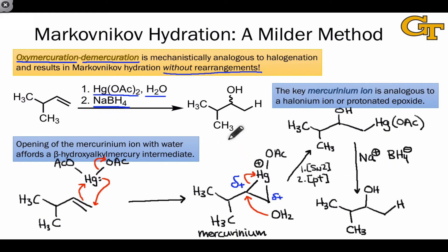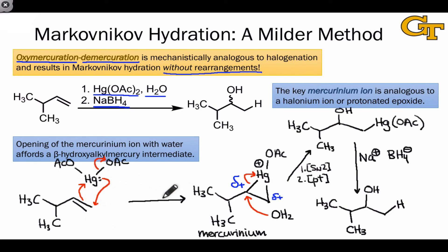Before finishing up, we should take a look at the stereochemistry of this reaction in more detail. By analogy to halogenation, this achiral alkene will experience approach of mercury 50% above the plane of the alkene and 50% below the plane of the alkene. This means that the mercurinium ion will form as a racemic mixture of two enantiomers, which we can represent using a wavy bond here.